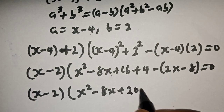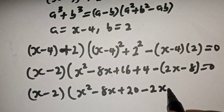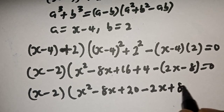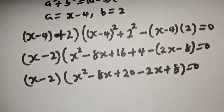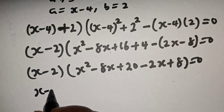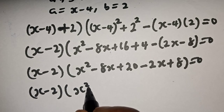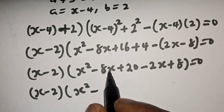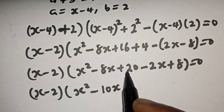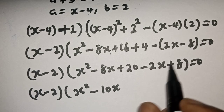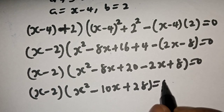So we have x minus 2, bracket x squared minus 8x plus 16 plus 4, giving 20, then minus 2x plus 8, all equal to 0. Here we have x minus 2, bracket x squared minus 8x minus 2x giving minus 10x, then 20 plus 8 giving 28, equal to 0.